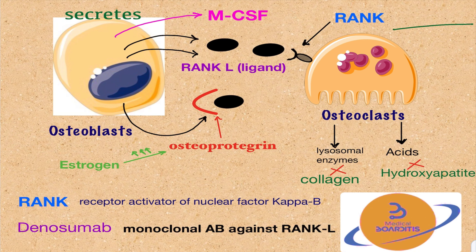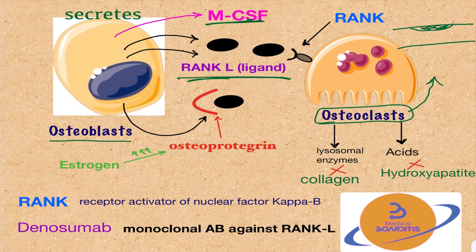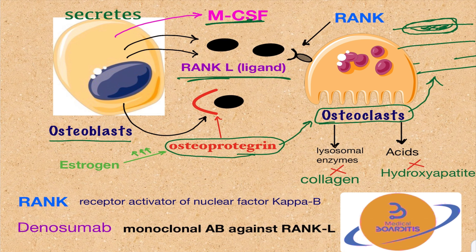For example, consider a bone with an area of old or damaged bone that needs to be removed. The osteoblasts secrete monocyte colony stimulating factor and RANK ligand to signal the osteoclasts to come and destroy that area. The osteoclasts clear the area, and then the osteoblasts secrete osteoprotegerin to stop further breakdown, leaving the area clear and empty for new bone to be laid down.